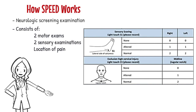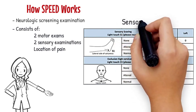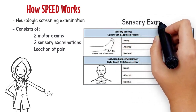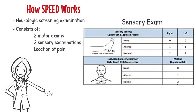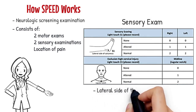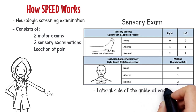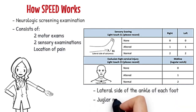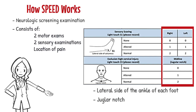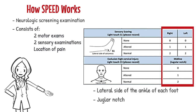Let's move on and talk about the sensory examinations. Sensation is assessed by light touch in two areas: the lateral side of the ankle of each foot and at the jugular notch. Scores are assigned as shown.